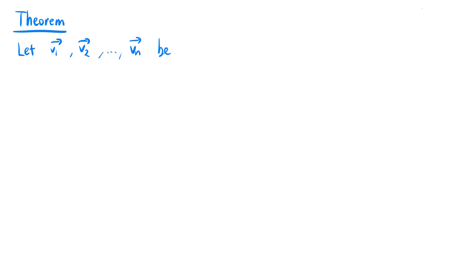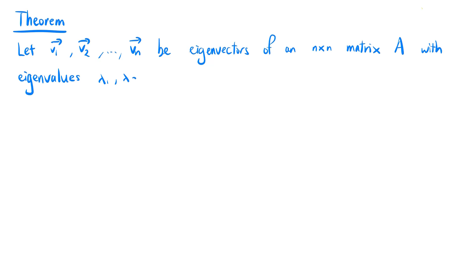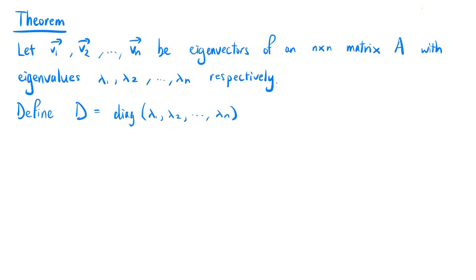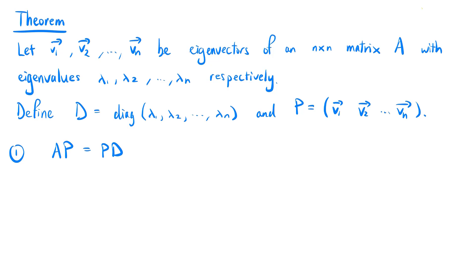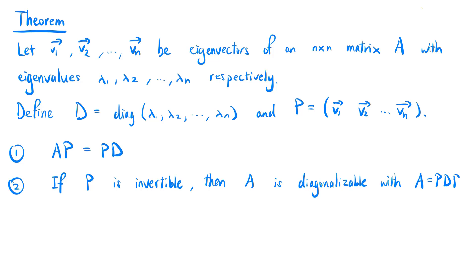The next theorem is central to the discussion of diagonalization. Let v1, v2 up to vn be eigenvectors of an n by n matrix A with eigenvalues λ1, λ2 up to λn respectively. Define D to be the diagonal matrix with diagonal entries λ1, λ2 up to λn, and P be the matrix with columns v1, v2 up to vn. Firstly, we have that A times P equals P times D. Second, if P is invertible, then A is diagonalizable with A equals P times D times P inverse.